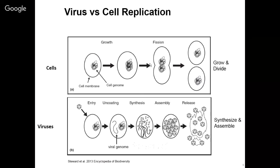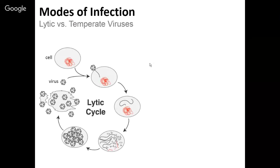There are different modes of infection. What we call the lytic cycle is an example of when viruses are the enemy of a cell. The virus attaches, the genome gets inside, the virus makes copies of itself, and the last thing it does is rupture the cell to release progeny viruses out into the wild where they can encounter a new host. So that's not so good for a cell.